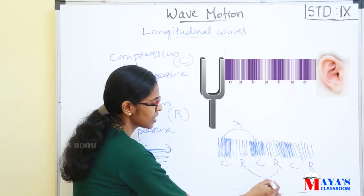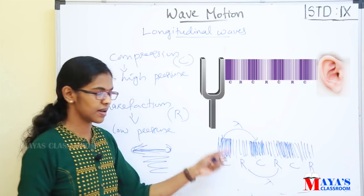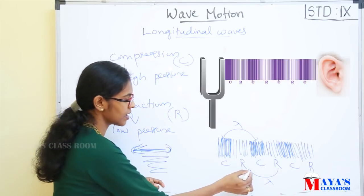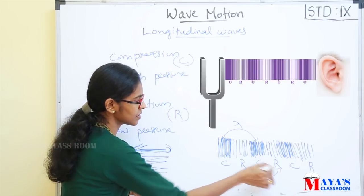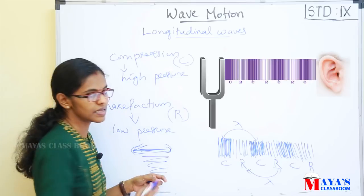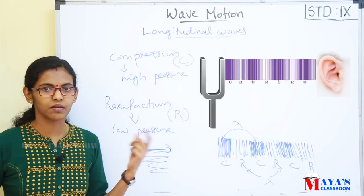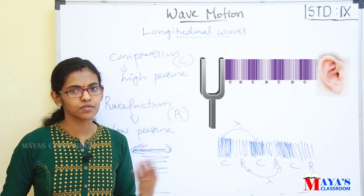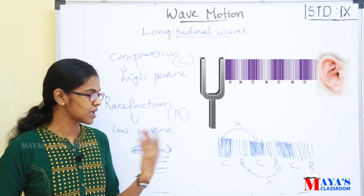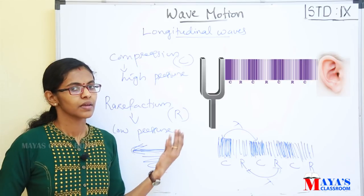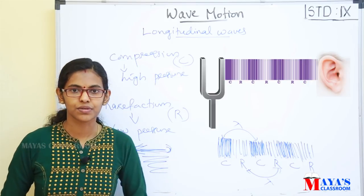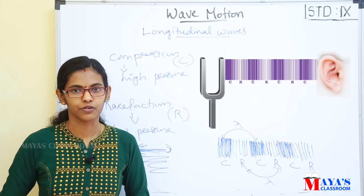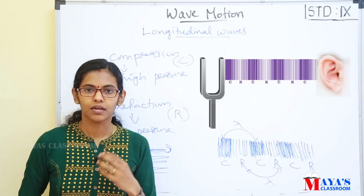The wavelength is the distance between any two consecutive compressions and the rarefaction.